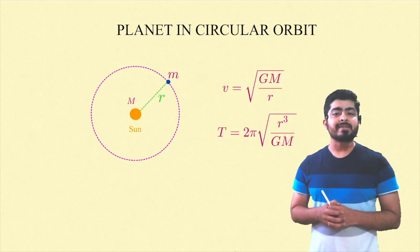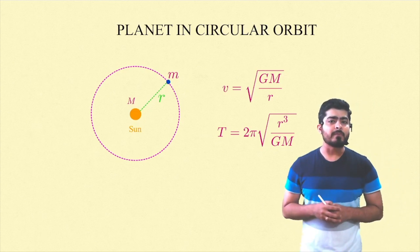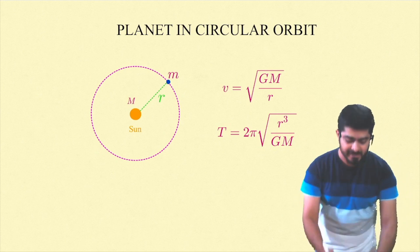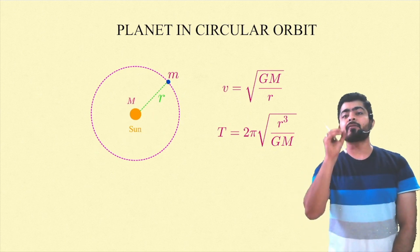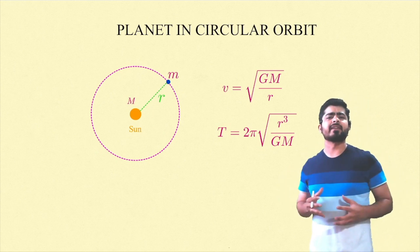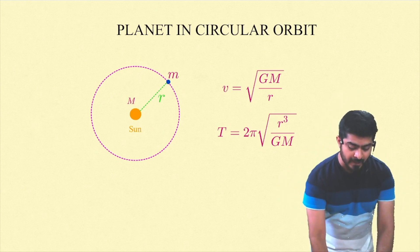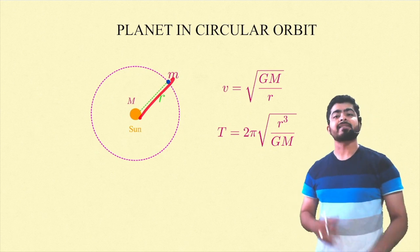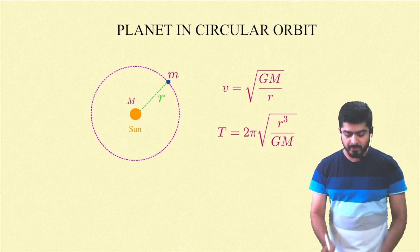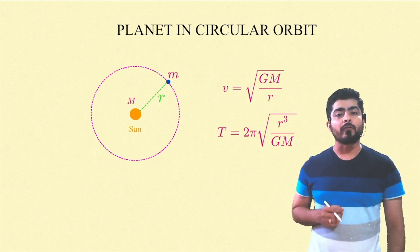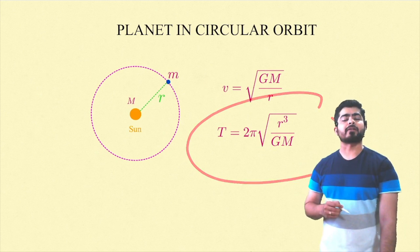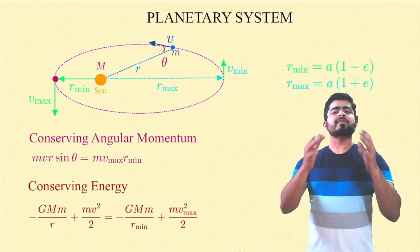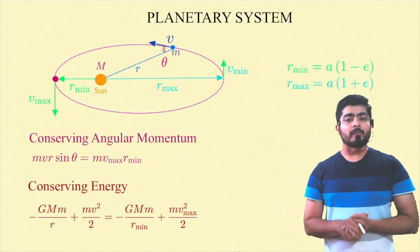Before going into the problem, let's understand some basics. For a circular orbit of a planet around a Sun, the Sun remains stationary at the center since it is very heavy. If the masses and orbital radius r are given, the orbital speed is root of GM/r, and the time period of revolution is 2π√(r³/GM).